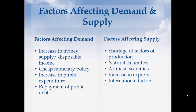Now let's look at factors affecting supply. Shortage in factors of production like land, labor, and capital increases the cost of production — for example, a shortage of labor leads to higher wages, increasing the cost of production and prices. Natural calamities like earthquakes, landslides, and tsunamis affect production and supply, resulting in price rises. Artificial scarcities from hoarding and speculative trading result in price hikes. Increase in export of a commodity leads to domestic shortages, pushing up prices. International factors like oil price hikes and shortages in production of certain commodities lead to higher import prices.